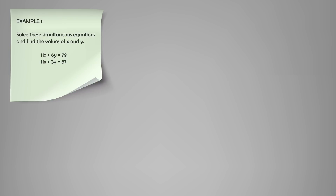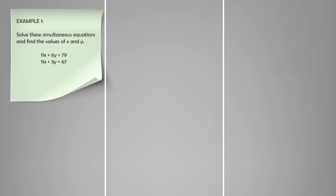Example 1: solve these simultaneous equations and find the values of x and y. We have 11x plus 6y is equal to 79, and 11x plus 3y is equal to 67. The very first thing we do is label our equations — let's call the first one equation 1 and the second one equation 2. The next step is to eliminate a variable — either the x term or the y term.